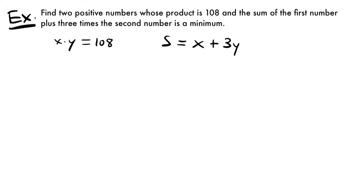That's what this says right here — the sum of the first number plus three times the second number is a minimum. We're going to try to find the values of x and y such that this sum is a minimum. This equation is our primary equation; we are going to take a derivative of it because we're trying to minimize the sum. Whichever equation deals with the quantity you're trying to maximize or minimize, that's the one you take the derivative of. To do that, we need to represent this equation in terms of one variable, either just x or just y.